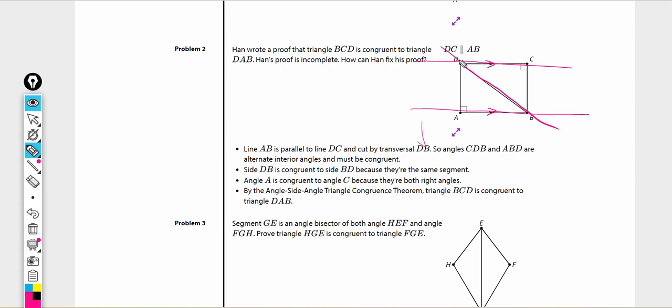Line AB is parallel to line DC and cut by transversal DB. Angle CDB and ABD are alternate interior angles and must be congruent. True. Side DB is congruent to side BD because they're the same segment. Also true. That side is a shared side, so it's congruent to itself. That's called the reflexive property. Angle A is congruent to angle C because they're both right angles. Also true.